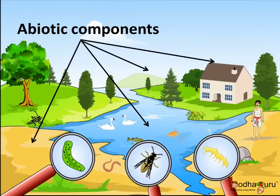For example, the soil, air, water, etc. Even the components of the weather like the temperature, sunlight, etc. are also abiotic components.